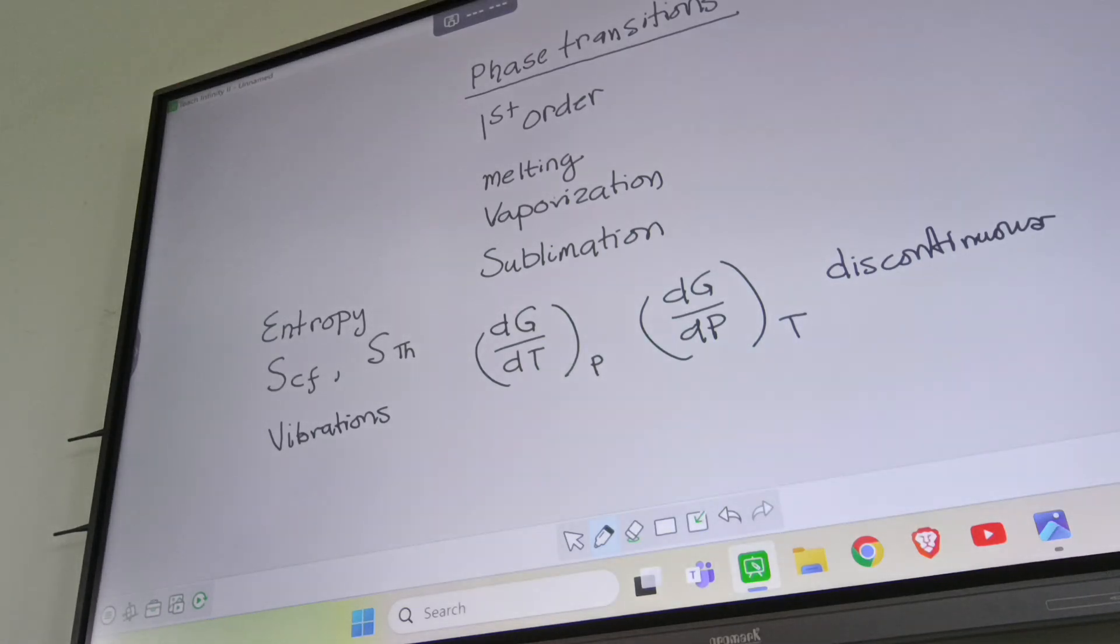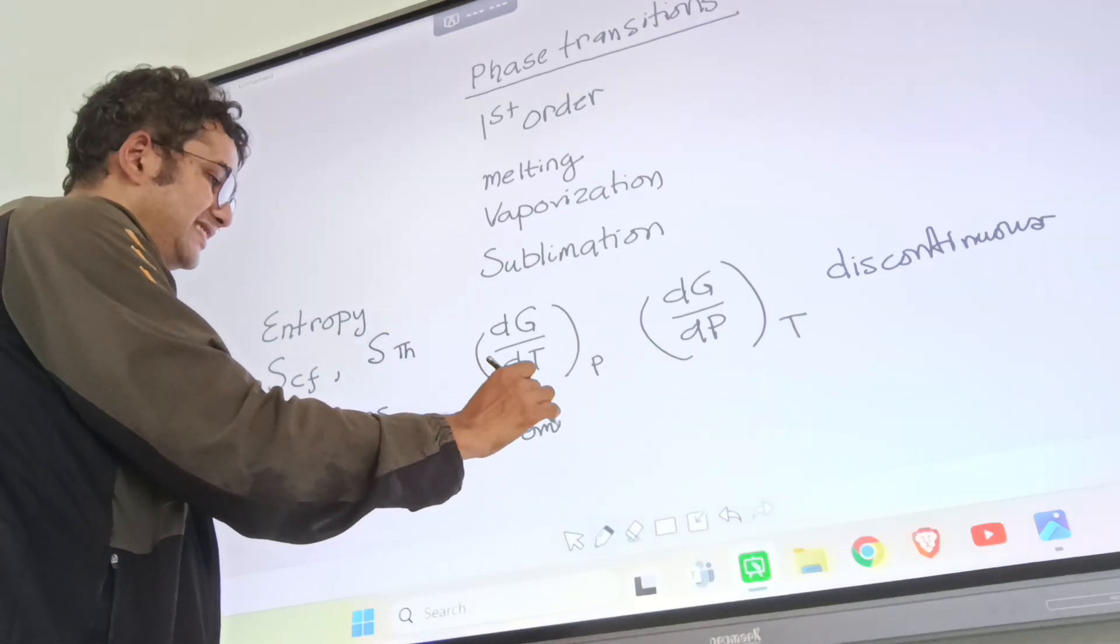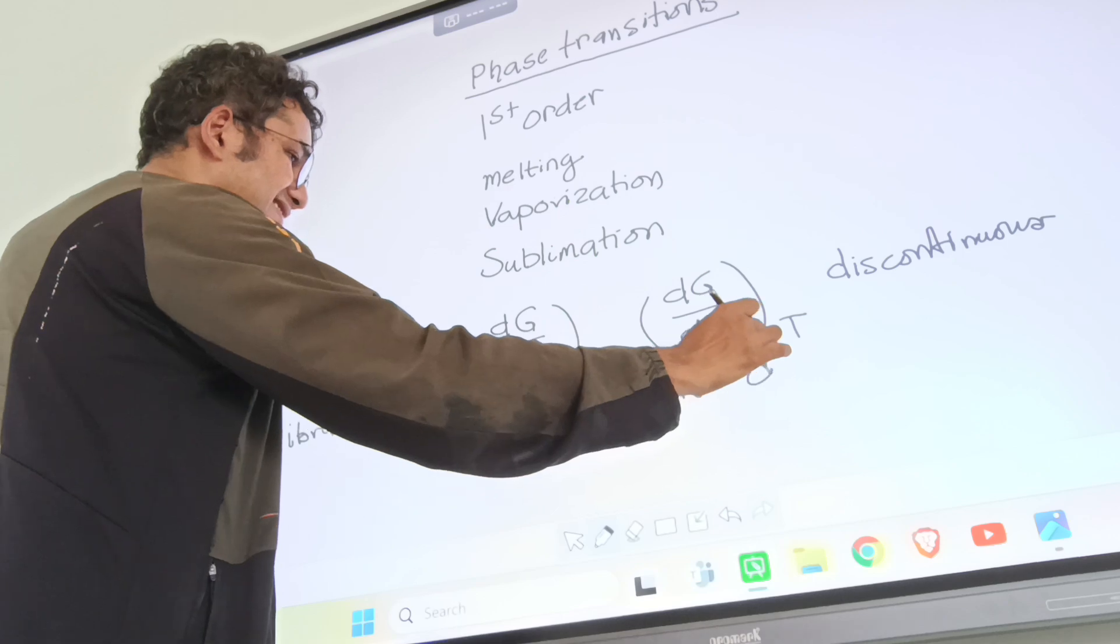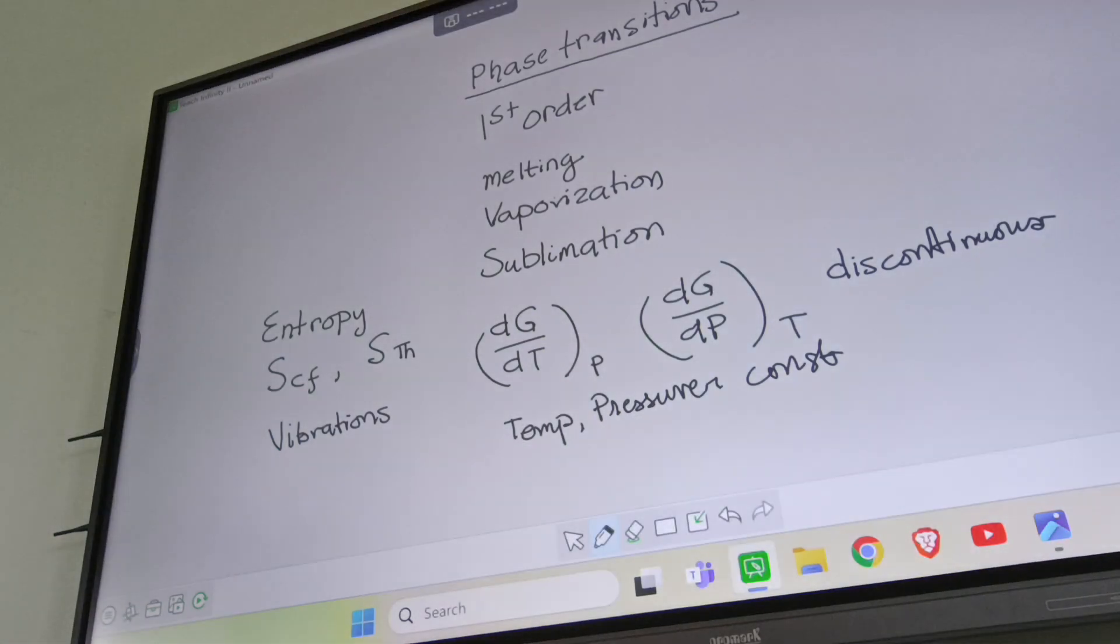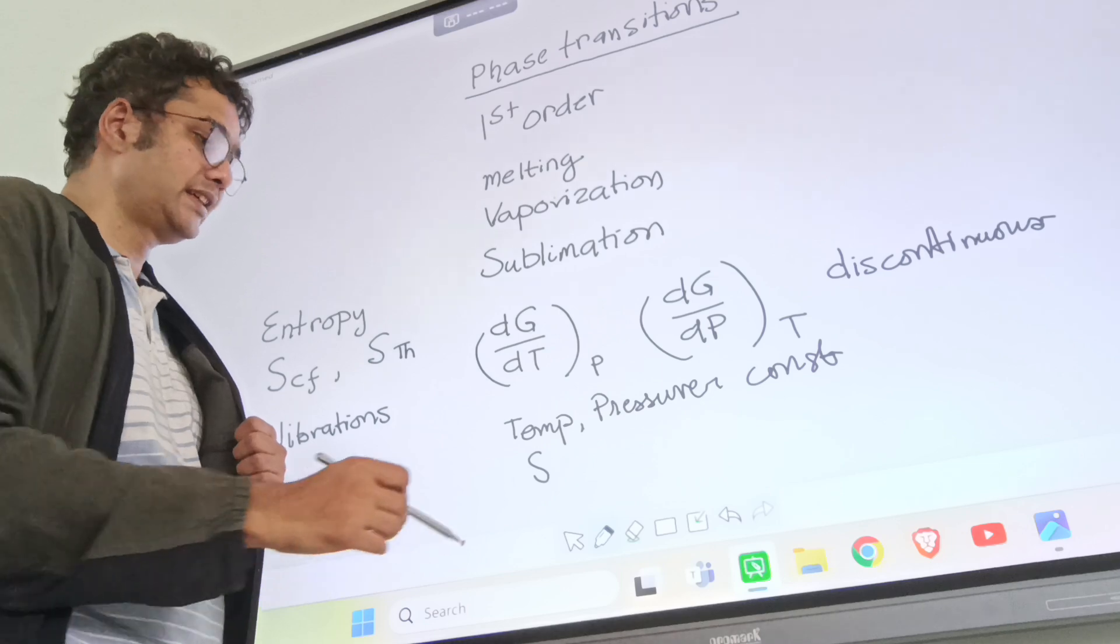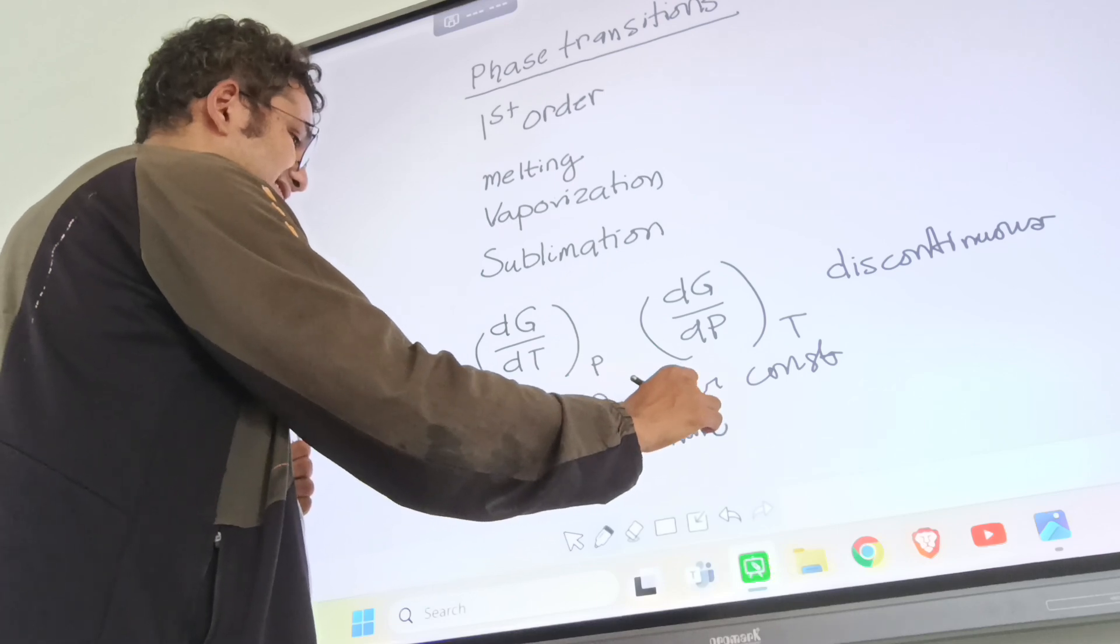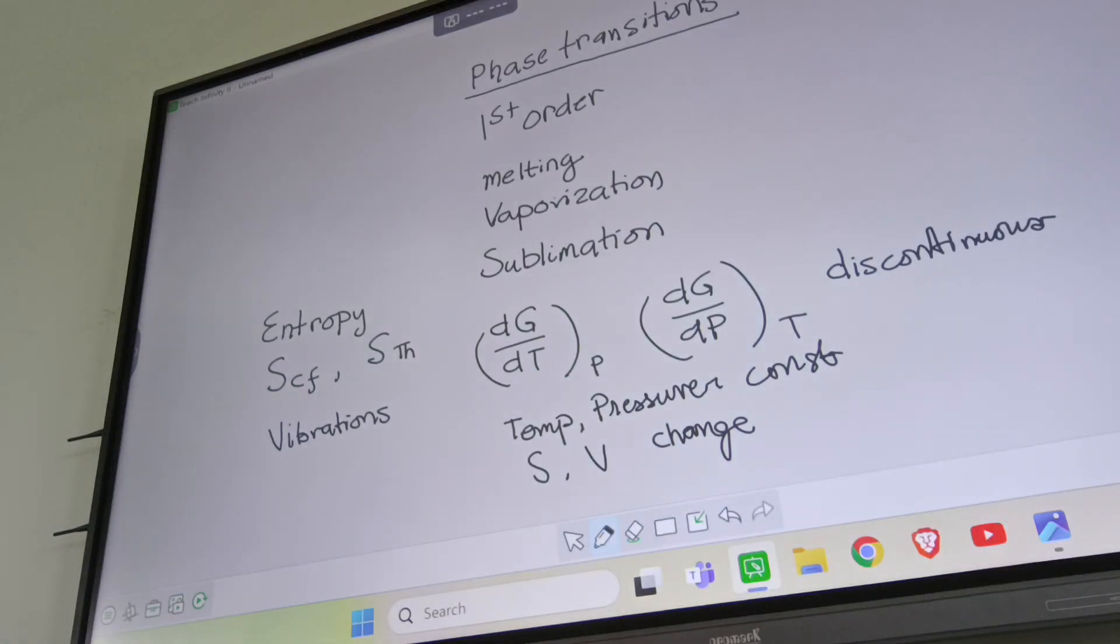Basically, first we have to understand the fact that first-order phase transition means the temperature and the pressure, they are constant. If you keep the temperature and pressure constant during the phase transition that is taking place, we can call it as first-order phase transition. Another condition is that the entropy S and the volume, they undergo a change.